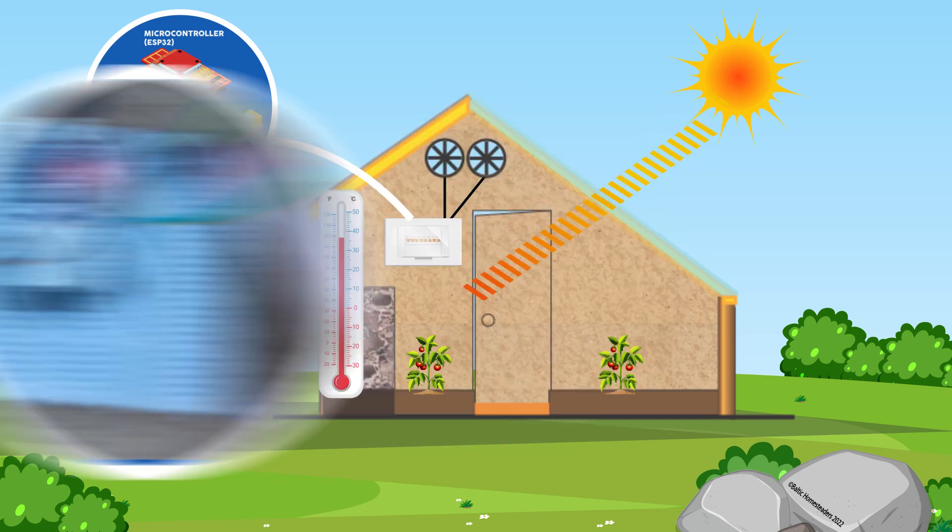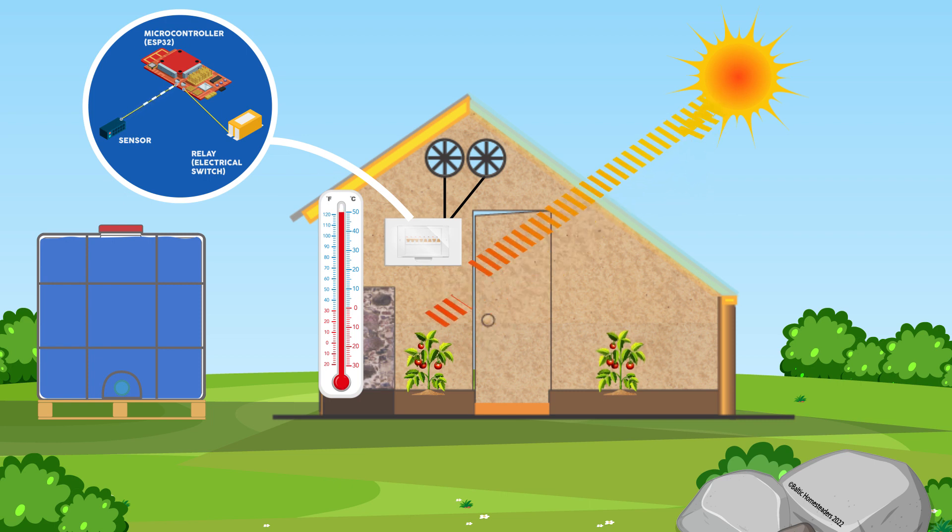These would be housed in a box inside the greenhouse itself and powered by solar or batteries. The sensor sends this data to a microcontroller, which is a small computer that can be programmed to make decisions based on the data it receives.